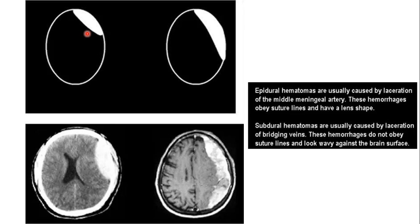Epidural hematomas have a lens shape because the dura and bone are both strong, so the blood separates the dura from the bone, resulting in a biconvex lens-shaped appearance. Since the dura is firmly attached at the sutures of the brain, the epidural hematoma respects the sutures — it does not cross the suture line. The hematoma stops at the coronal suture, the sagittal suture, or the lambdoid suture.